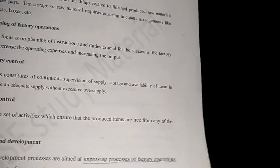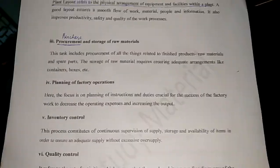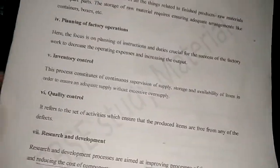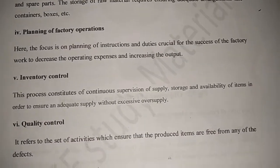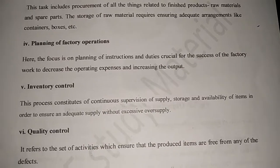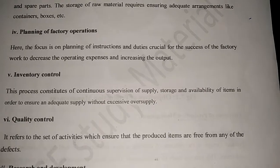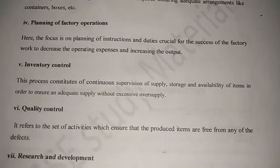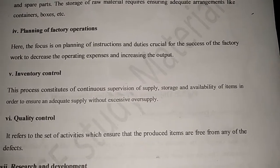Then planning of factory operations means reducing operating expenses and increasing output so that there is more profit for the business. Next is inventory control, which includes supply control — there should be no shortage of goods and no excess of supply.